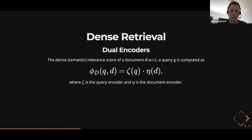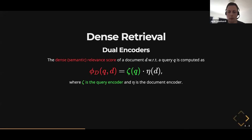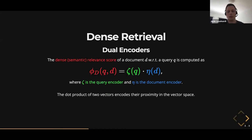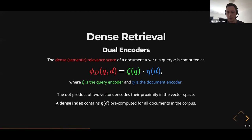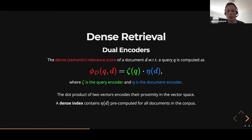Under the hood, in order to compute your dense or semantic matching score — we call this phi d — you simply take a dot product of your query representation and your document representation. These are two vectors, and the dot product is basically your score, encoding the proximity of the two vectors in the vector space. The nice thing about dense retrieval is that you can do a lot of pre-computations. For indexing, you just pre-compute the document representations for all documents in your corpus — this is eta of d — and that is basically your index.